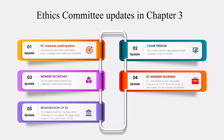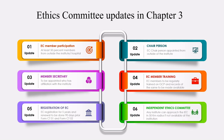Ethics Committee registration has been extended to five years, and renewal of that registration shall be done 90 days prior to expiry using Form CT02. You submit for EC registration using Form CT01 and receive approval in Form CT02. If a particular institute does not have an Ethics Committee, it can approach any Ethics Committee within a 50-kilometer radius. This provision exists because the number of Ethics Committees is relatively limited, and this helps sponsors access one within that radius.